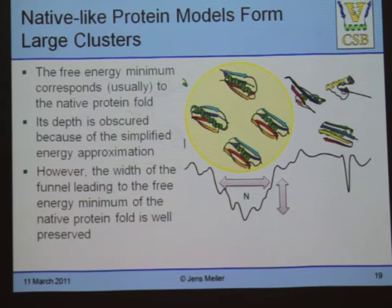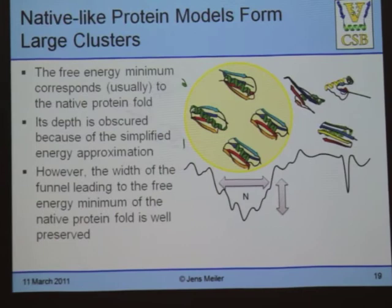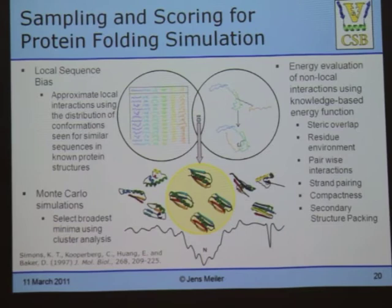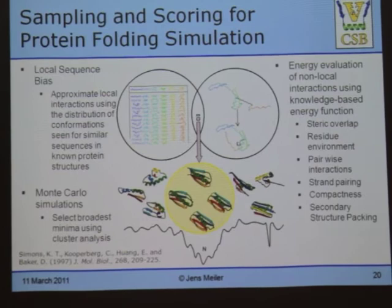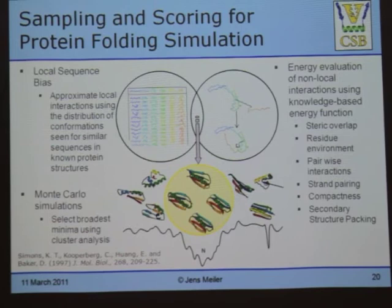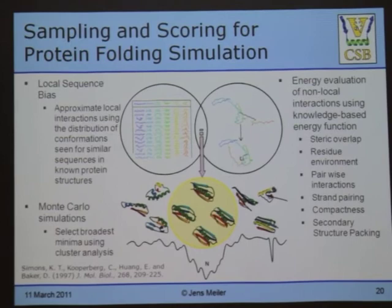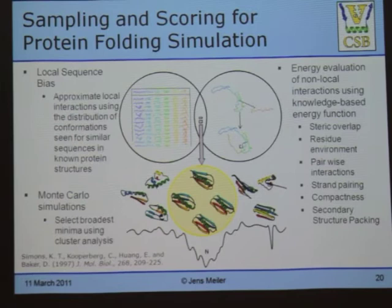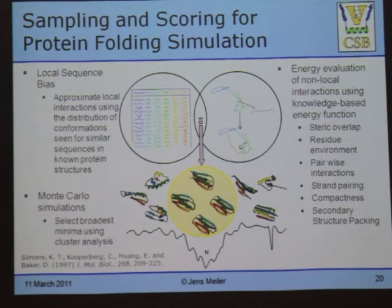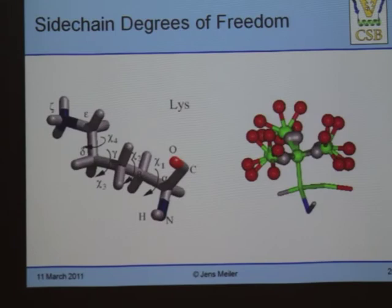This leads to the clustering idea. If the energy minimum is a wide minimum, and you run your Monte Carlo simulation several thousand times, multiple models should fall into that minimum — that's why we look for large clusters. It will not always work. We only do it in the absence of experimental data; if we have experimental data, we always use it to find our models. For ab initio folding, sometimes you get 20 clusters and have low confidence; sometimes you get two very large clusters and are fairly confident one is correct. You never get a single definitive answer.